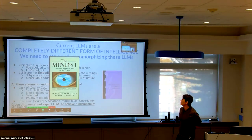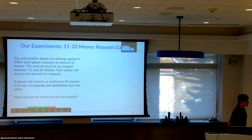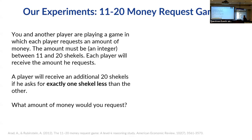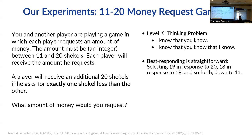Let me get to our experiment. We chose a very simple game: a level-k thinking problem called the 11-to-20 money request game. Two players each request an integer between 11 and 20. Each receives the amount requested, plus an additional 20 if they ask for exactly one less than the other player. You have to assume what the other person is thinking — 'I know that you know that I know' — and it goes on. Best response depends on assumptions about what the other person would do.